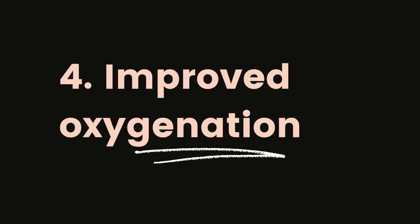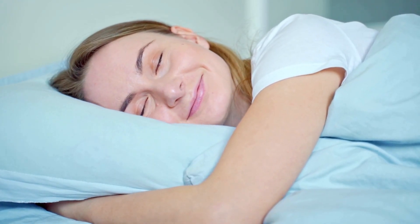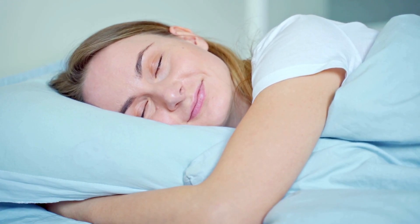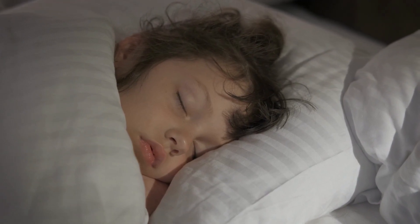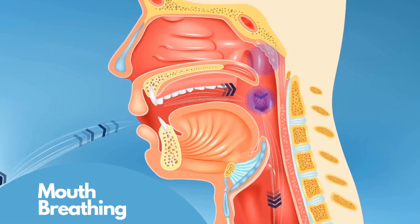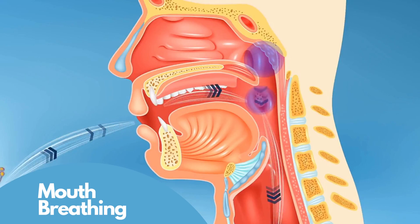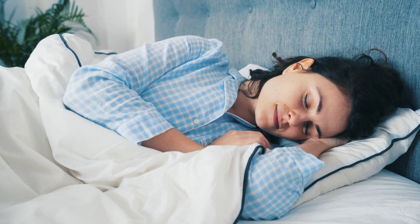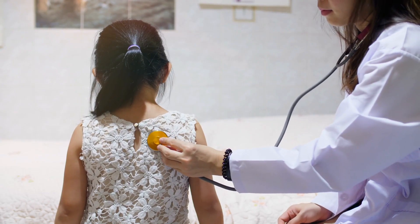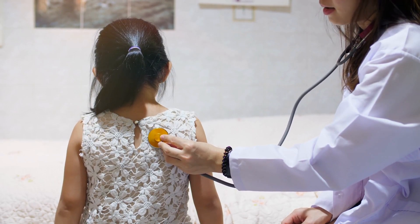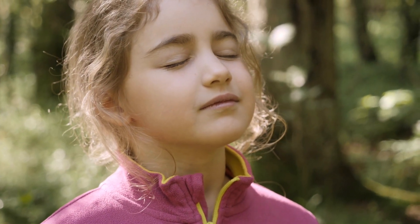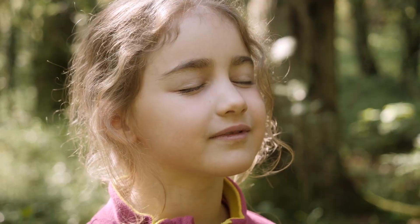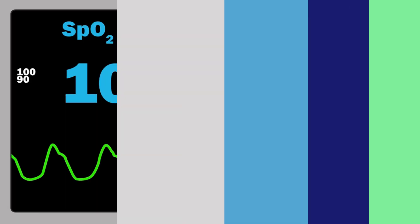Adenoid gland removal can potentially improve oxygenation, particularly if the adenoids were obstructing the airways and causing breathing difficulties. When the adenoids are enlarged, they can cause nasal obstruction, leading to difficulty breathing through the nose, resulting in mouth breathing and a decrease in oxygen inhaled. This can lower oxygen saturation levels in the blood. By removing the adenoids, the airway obstruction is resolved and nasal breathing becomes easier, potentially improving oxygen saturation levels.